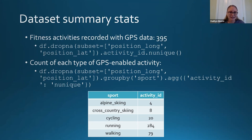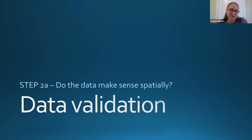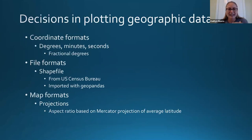Filtering by GPS also completely cuts out the 'other' category, because if I'm doing cardio kickboxing in my room because of COVID, I probably don't need to know I stayed put the whole time. Moving on to data validation — the first thing I'm going to look at is whether the data makes sense spatially, and before I show some plots, I'll run through some decisions I made in plotting this geographic data.